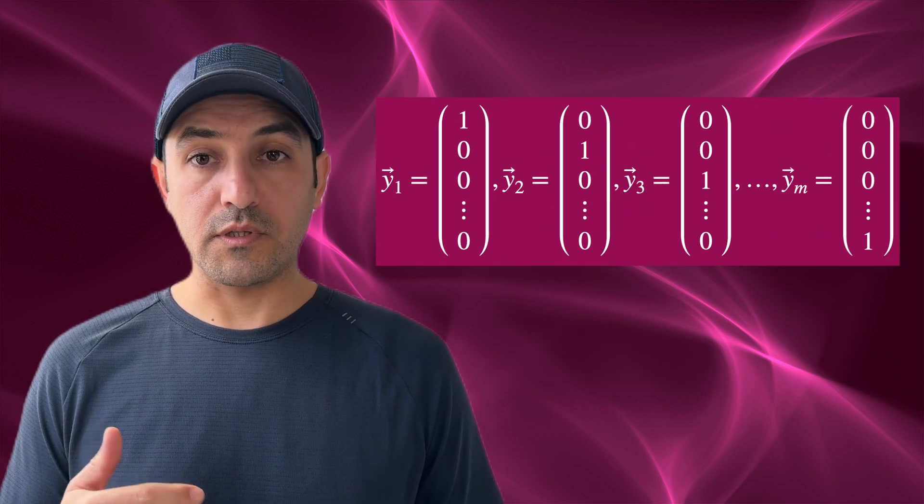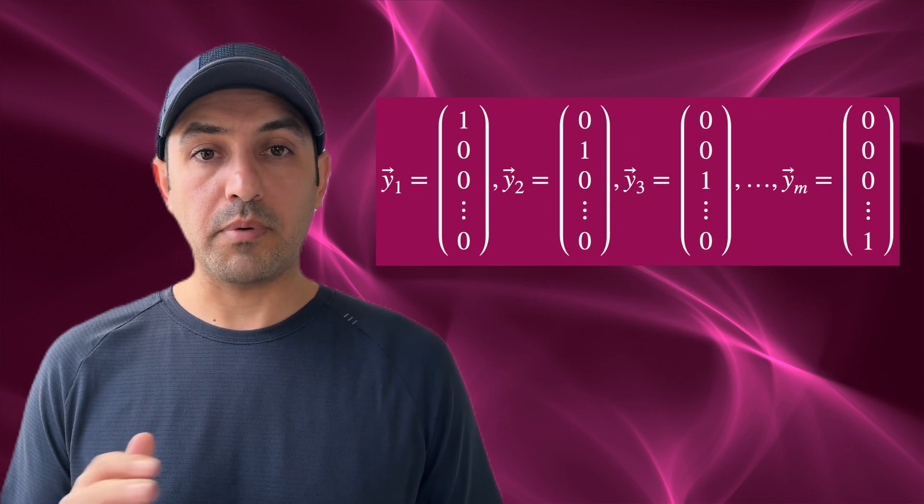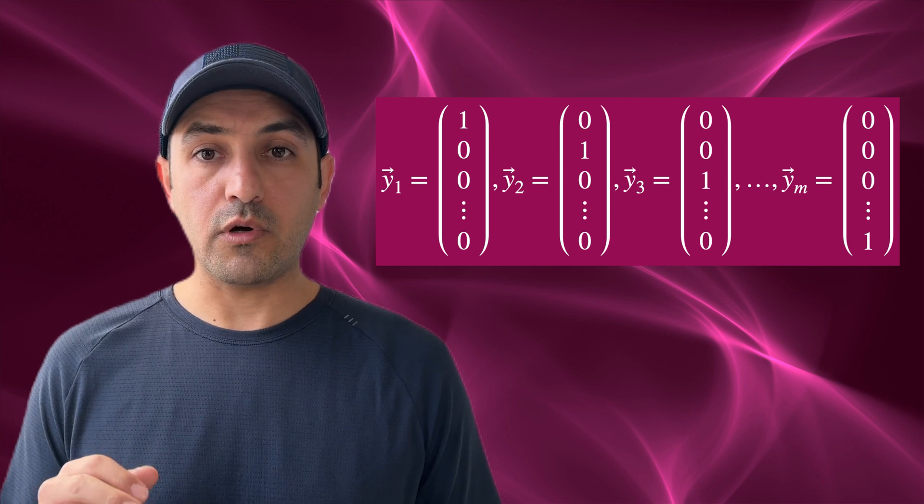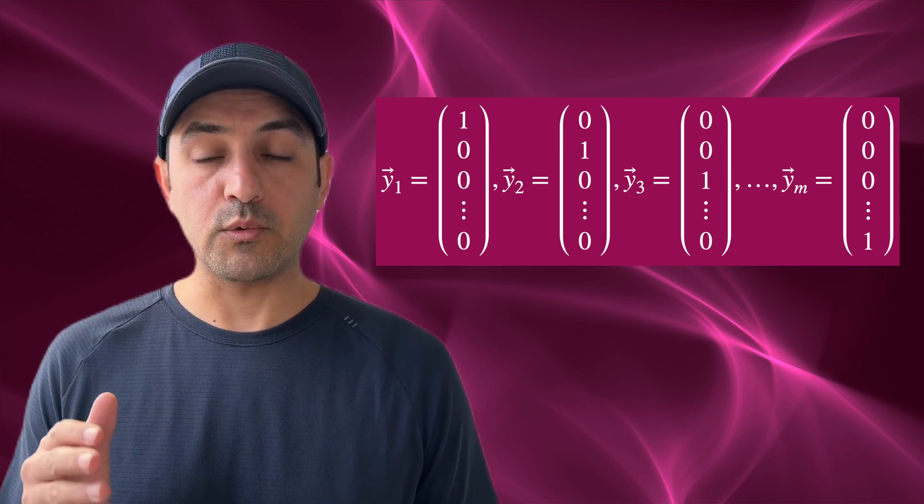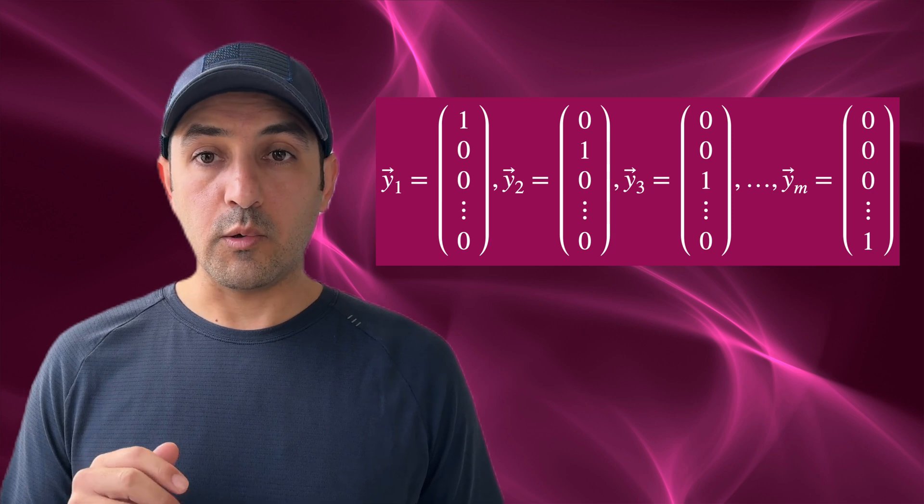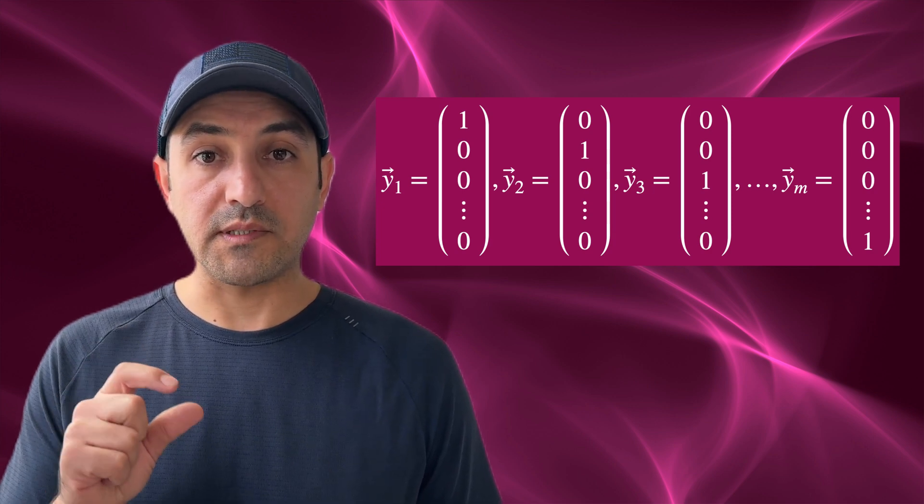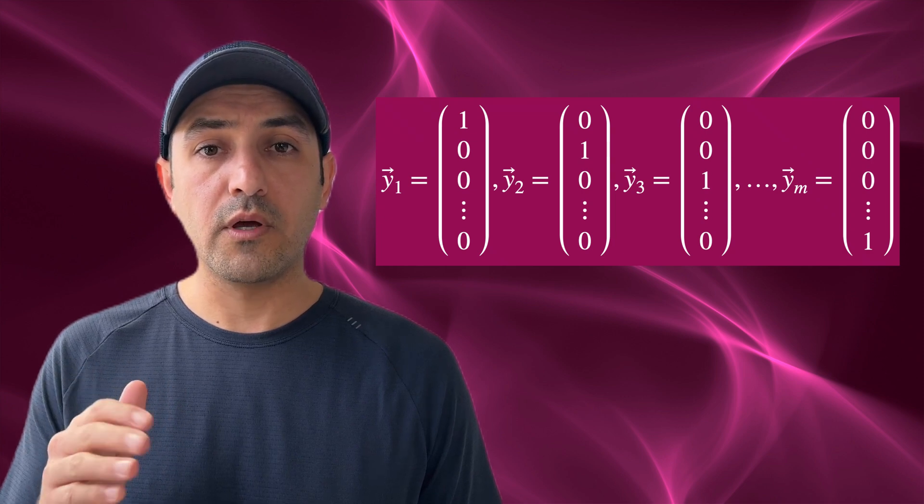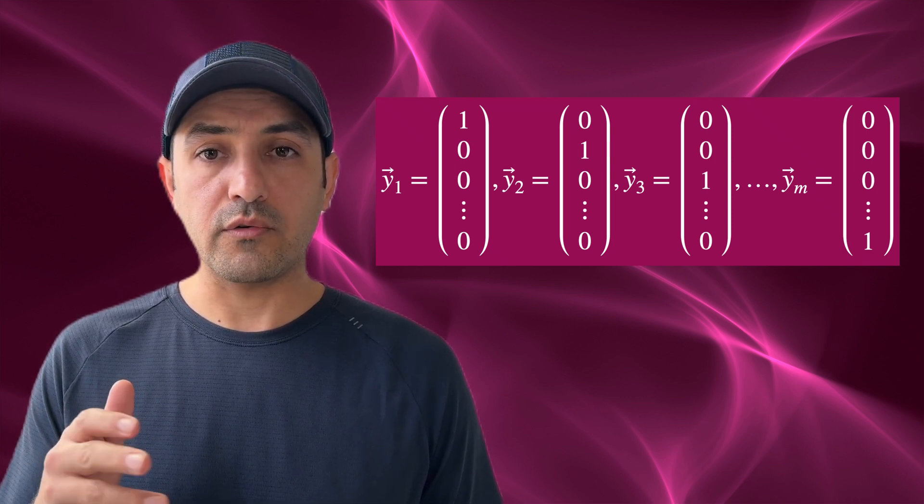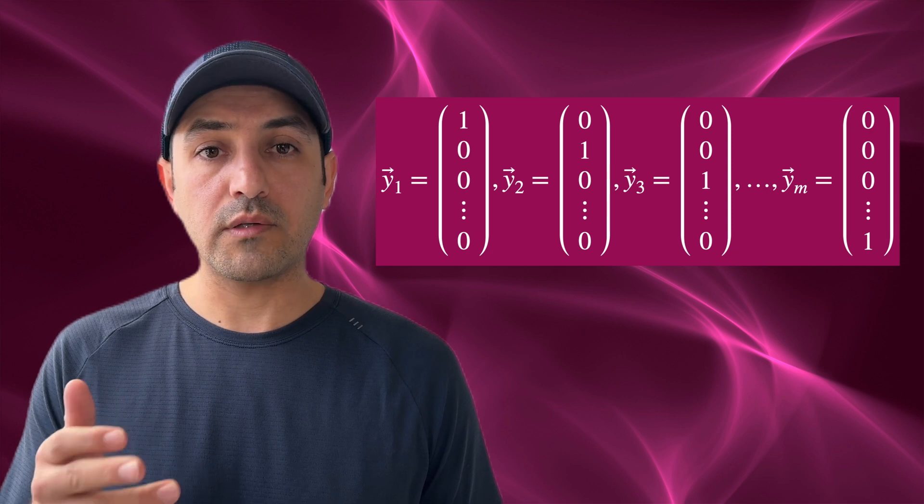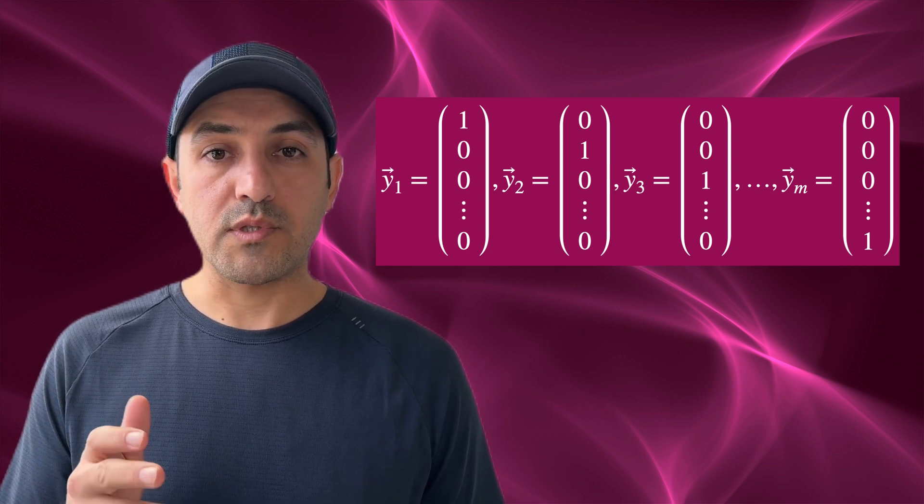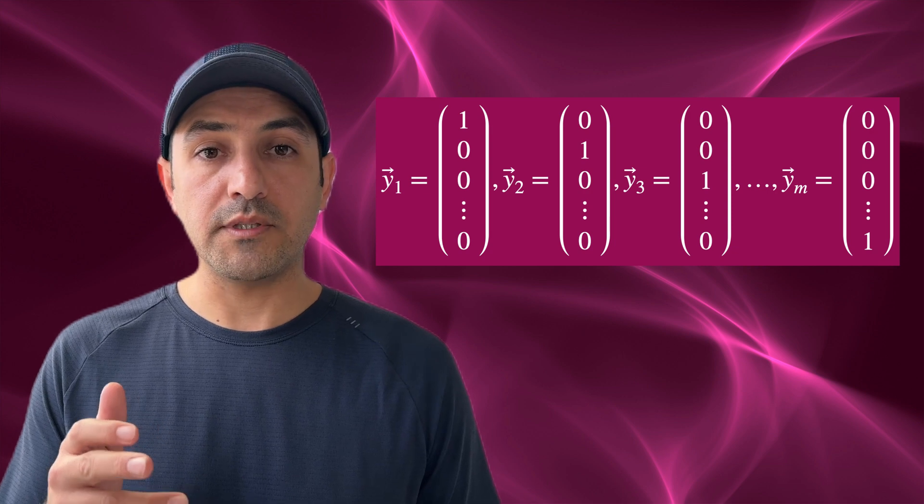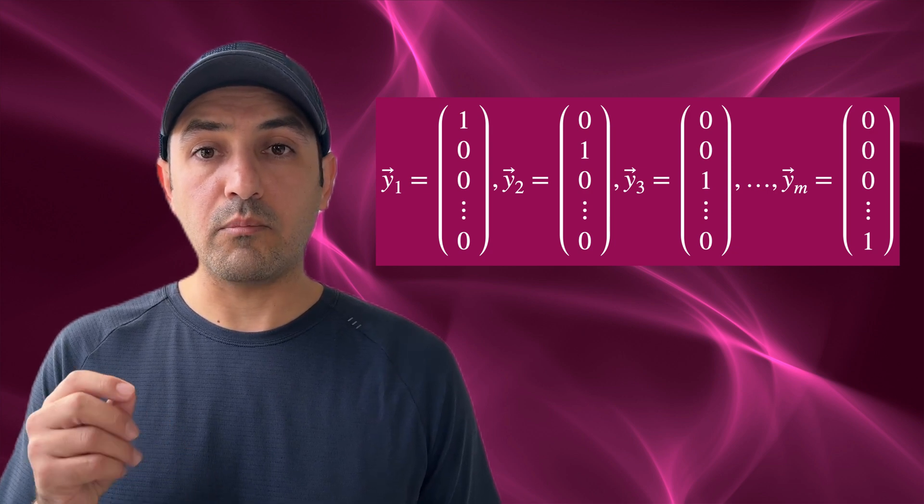Now let's define the y vectors in the following form: one y per class. In each y vector, all the components are zero except one that is equal to unity. The location of this unity determines the class. For example, in the example of dog, cat, and bird, y1 refers to the dog, y2 to the cat, and y3 to the bird.